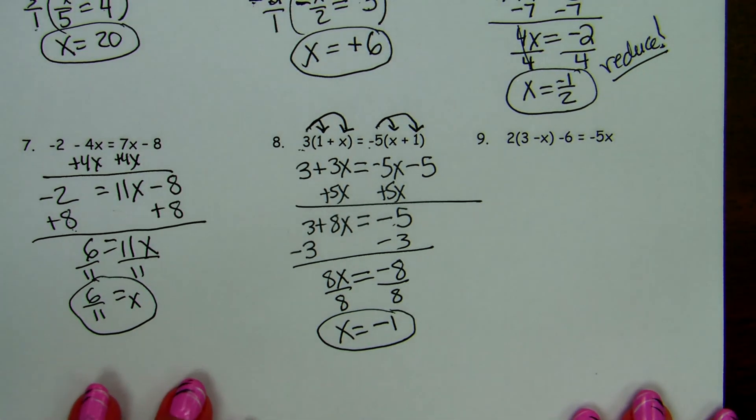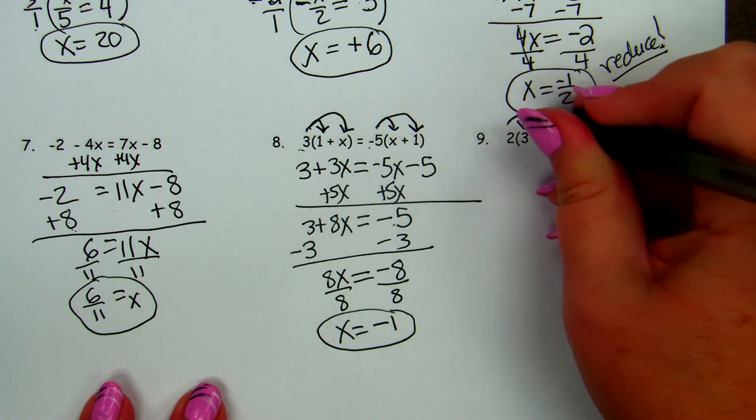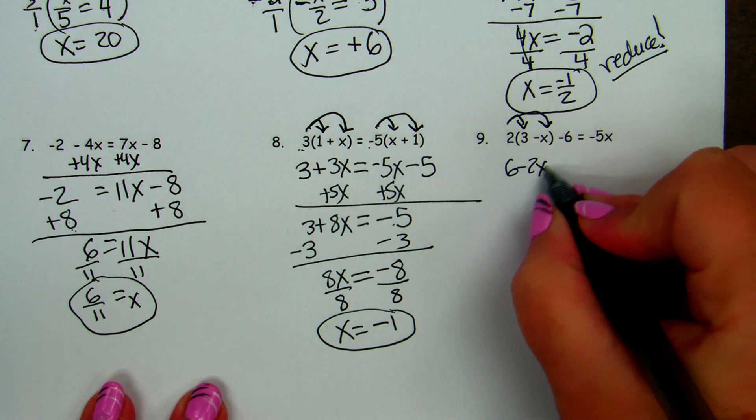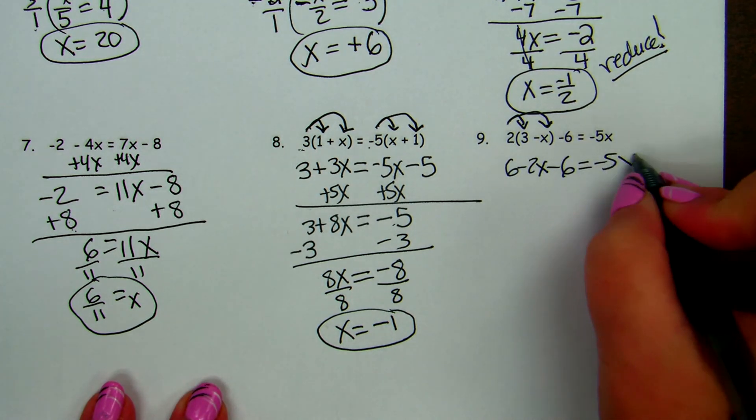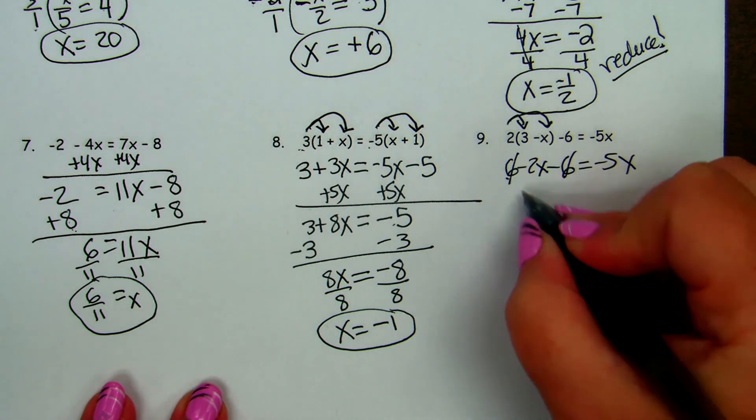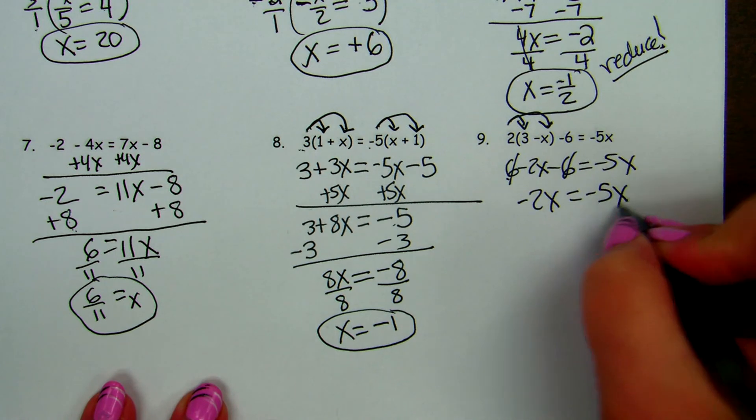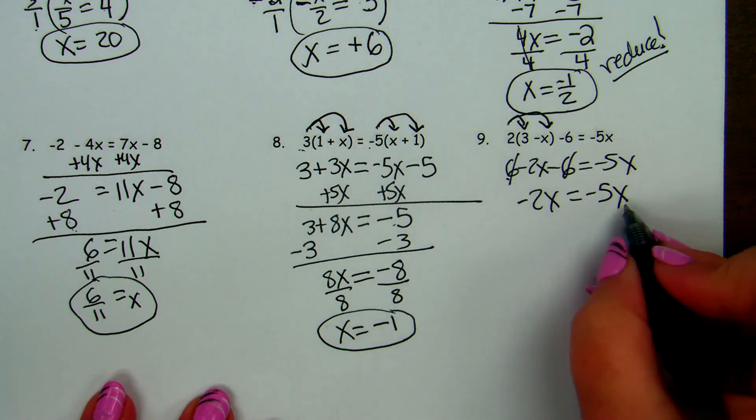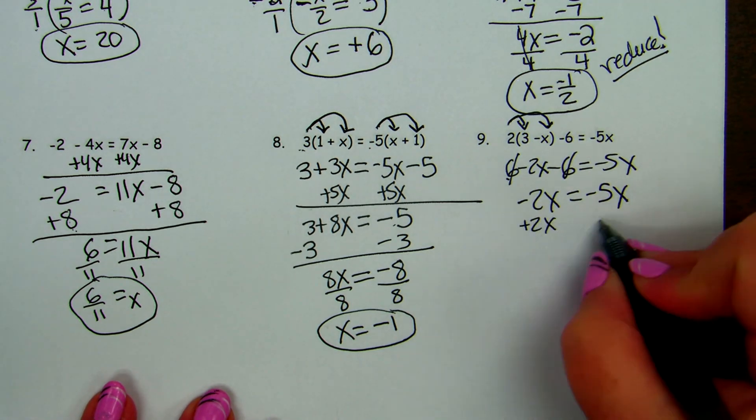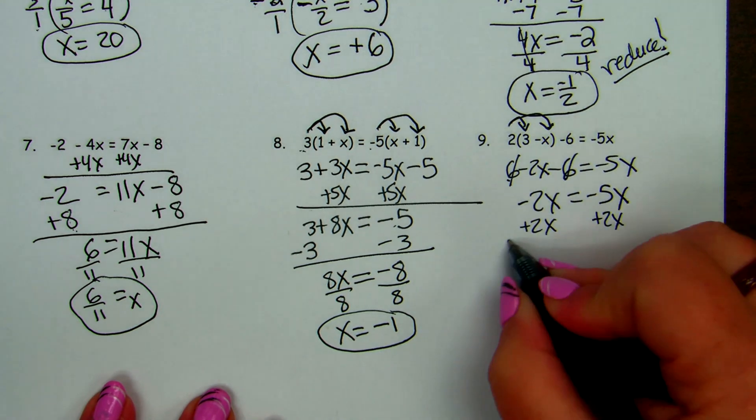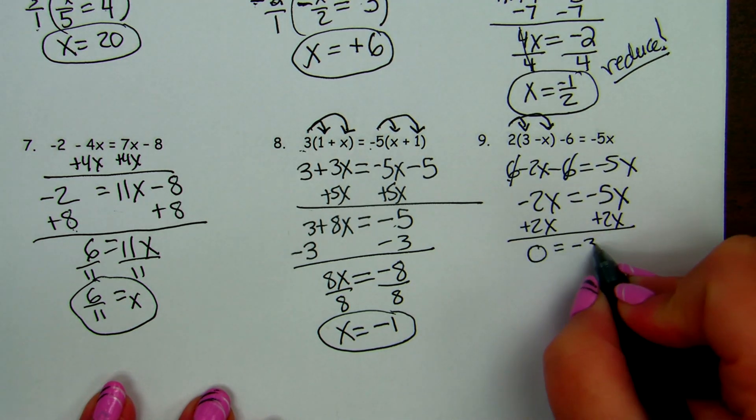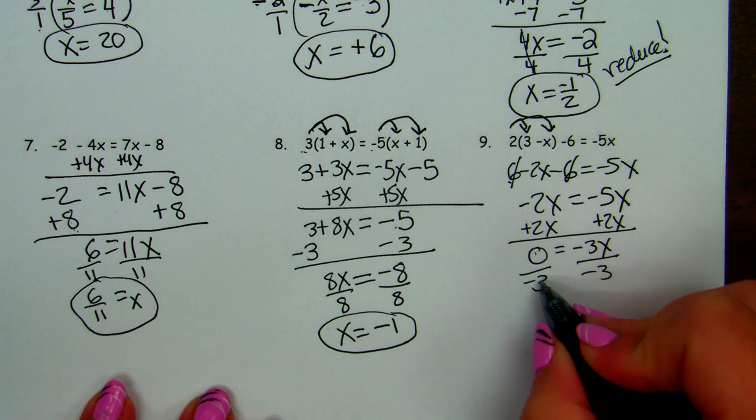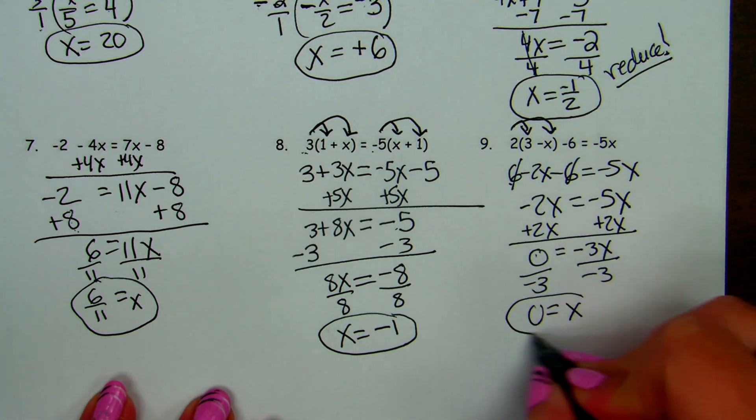And the last problem in our notes has the distributive property. 6 minus 2x minus 6 equals negative 5x. 6 minus 6 is 0. So let's move the x's together on one side. You can decide what you want to do. But if you add 2x, you could also add 5x. You get 0 equals negative 3x. So you divide by negative 3. 0 divided by anything is 0, and we get x equals 0.